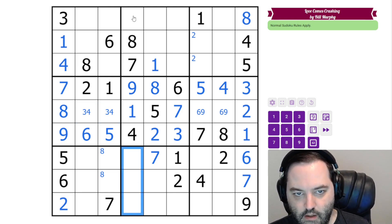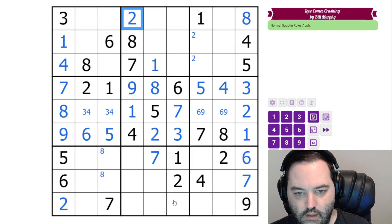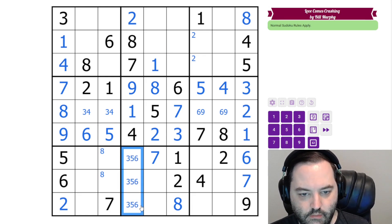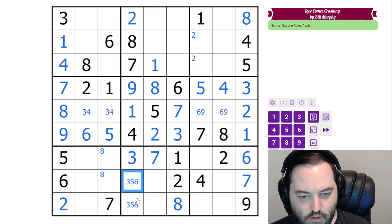We need a two in this column. Can't go in those cells. It goes here. We need an eight in this column. It has to go here. It has to be that eight. So these are three, five, six. That's three, five, six in that order. These are these digits. Four, nine here is resolved. Here we have three and six. That's also resolved.